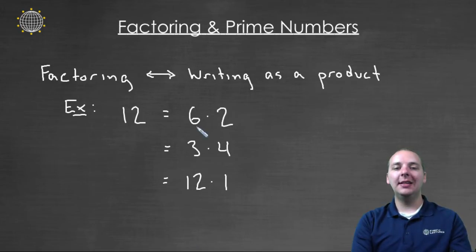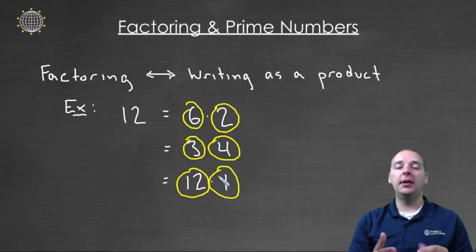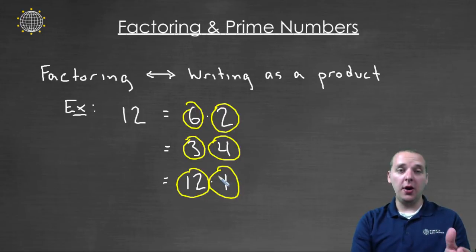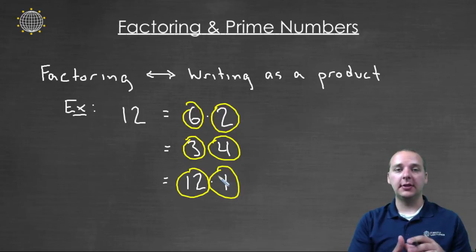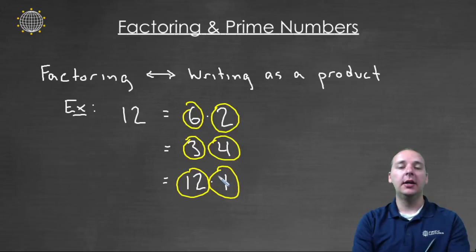And all of these individual numbers — the six, the two, the three, the four, the twelve, and the one — these would all be considered different factors of the number twelve. Now twelve has a lot of factors: it's got one, two, three, four, six, and twelve. That's quite a lot of factors.